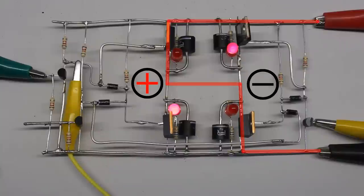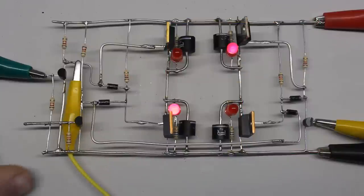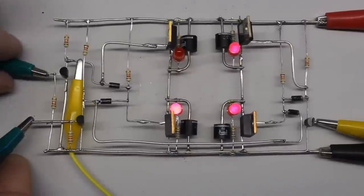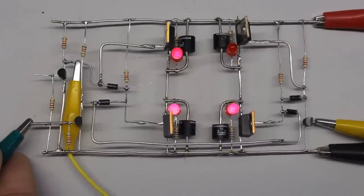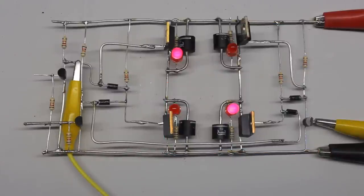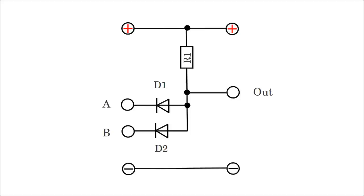A simple AND gate composed of two diodes and one resistor was introduced in the video about H-bridges. The H-bridge is enabled with the positive pole on the left side if there is a high level at the upper and a low level at the lower input, while the positive pole is on the right side if there is a low level at the upper and lower input. The working principle of the AND gate is simple. The signal at the output terminal is low, meaning at ground level, whenever at least one of the input signals is low, because the potential is pulled to ground by the forward biased diode.